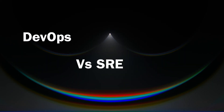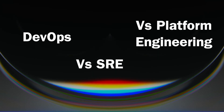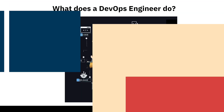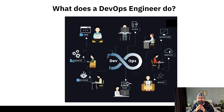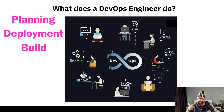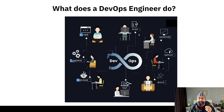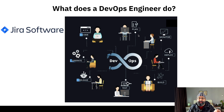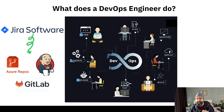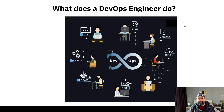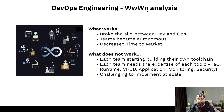Welcome to this ongoing series of 'What the Heck Is.' Today we'll talk about DevOps versus SRE versus Platform Engineering. You've likely seen the famous infinity loop covering everything from planning to deployment, build, test, release, operate, and code. For example, in planning the DevOps engineer would be responsible for integrating Jira with your code system, whether it's Azure Repos, Jenkins, GitLab, or whatever.